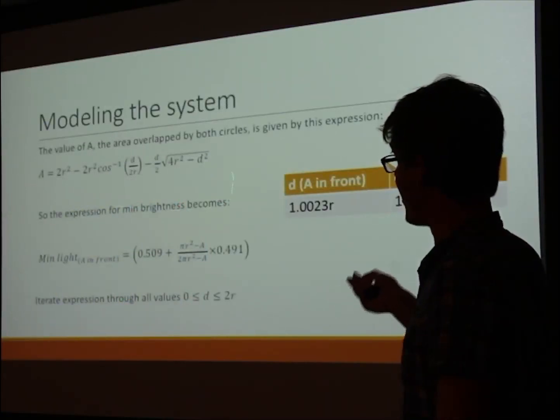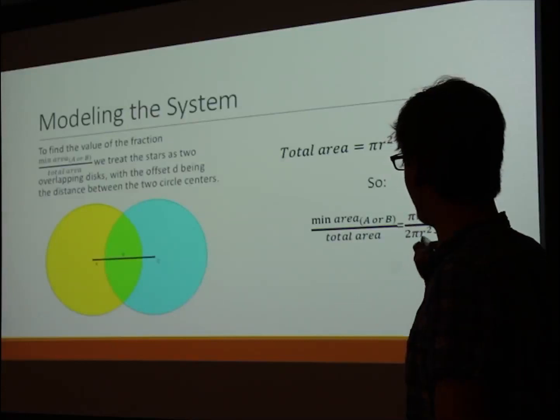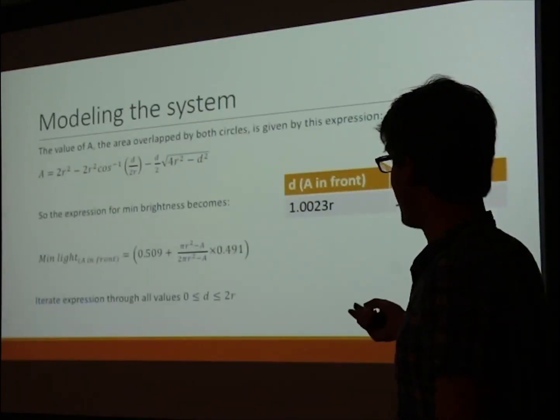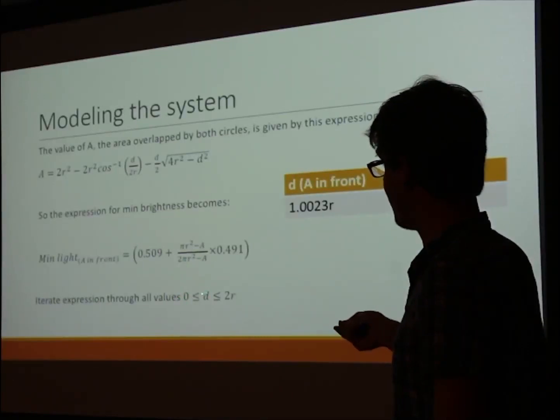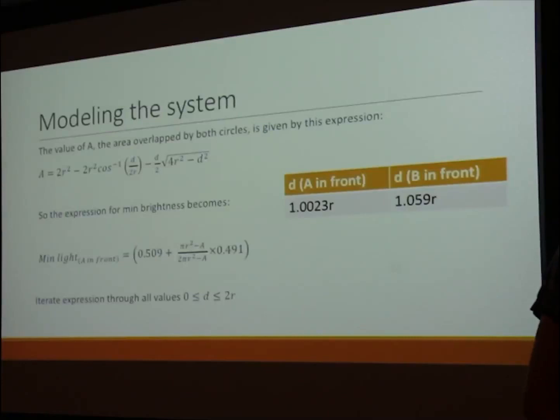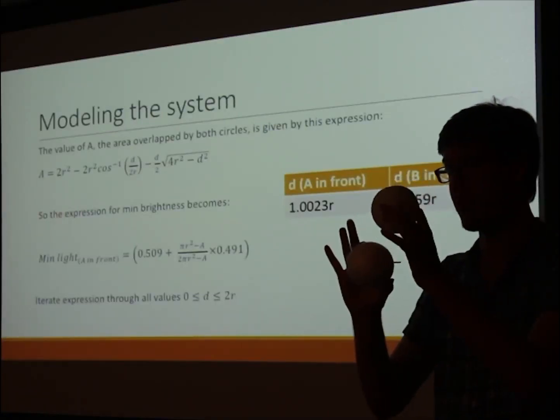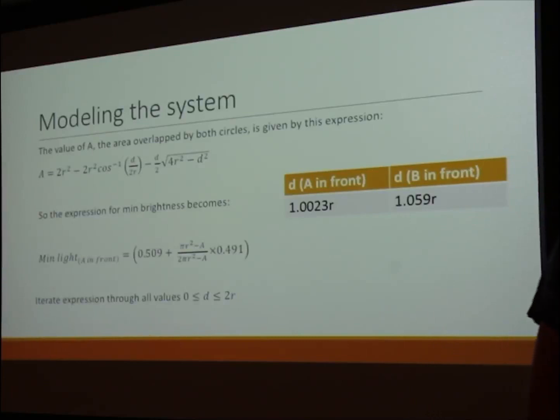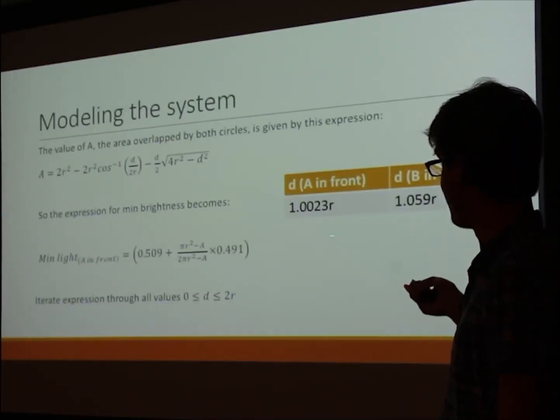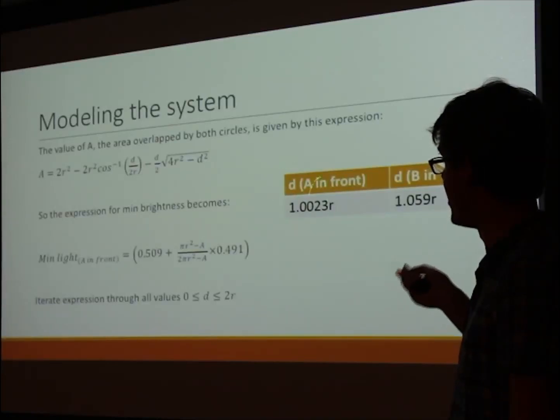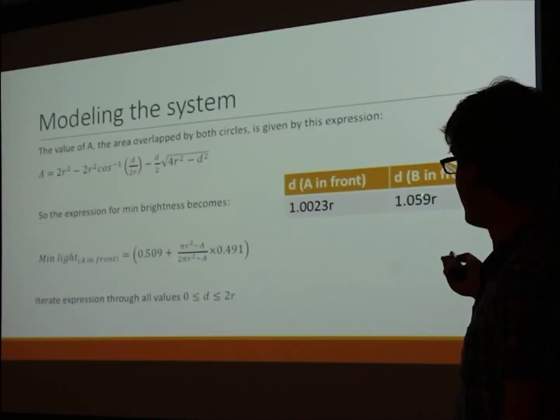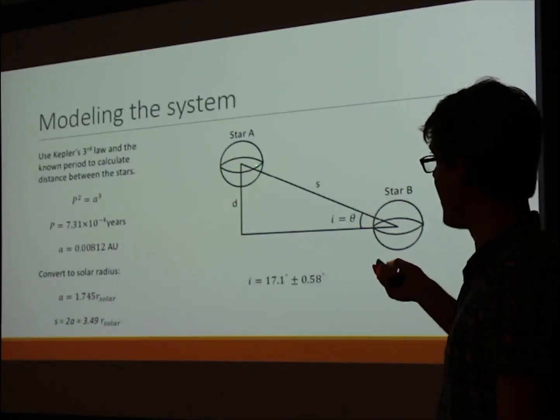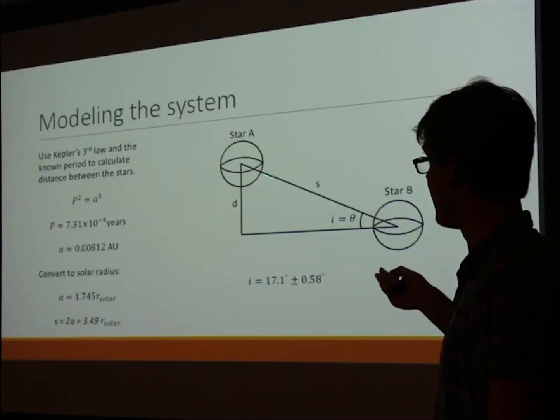This is an expression for the area of this overlap. What we want to do is subtract that from the total area of the two stars if there was no overlap. Here we can see that if we iterate the function through all possible values of that overlap—zero being no overlap like this, or two r (r being the radius of the stars)—that would be like this, complete overlap. With those values, I found that the d values for using the maximum minimum of star A was about 1, with the maximum minimum of star B being about 1.05. With that, we can now move on to finding the value for this s, which will then, knowing these two values, allow you to get this angle.